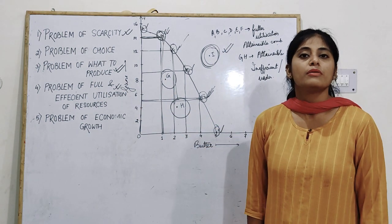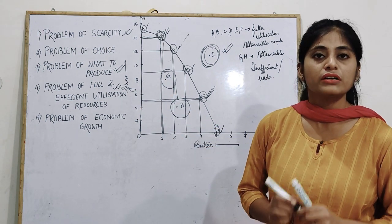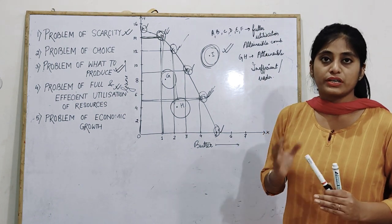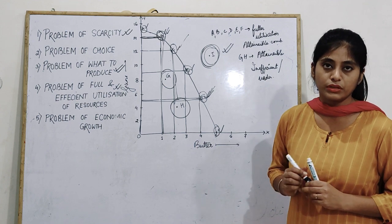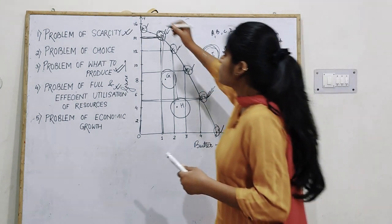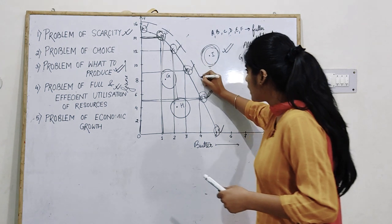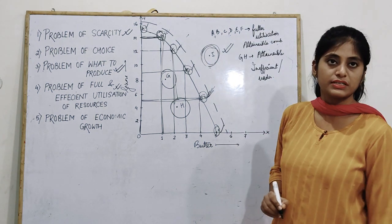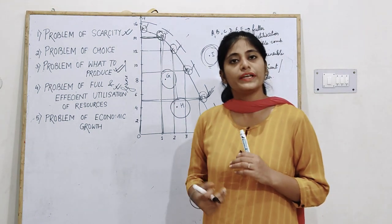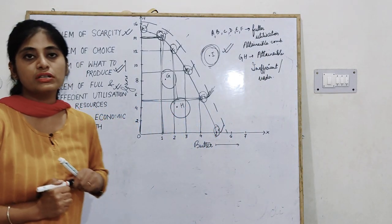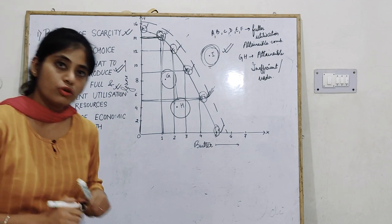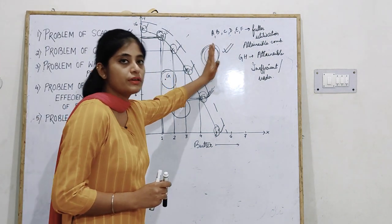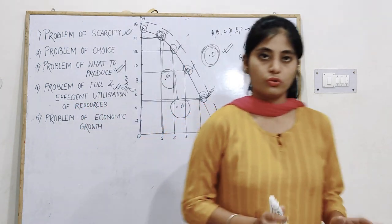Next is the problem of economic growth. If there is growth in an economy, your PPC will shift towards the right — that will be your new PPC curve. Because if there is growth in an economy, resources will also increase as well as technology. Then your PPC shifts towards the right. This is the problem of economic growth.